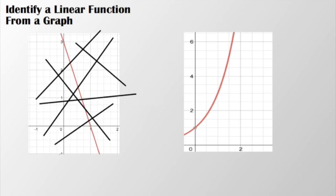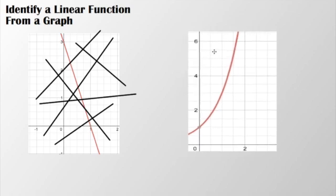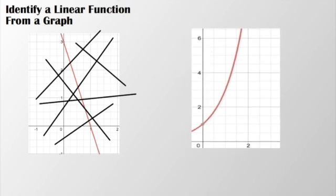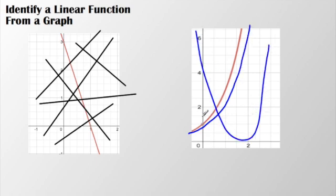If it does not represent a line, as you can see here there's curvature, then it is a non-linear function. And that's the easiest way to identify a linear function from a graph. The eyeball test is often the quickest one.